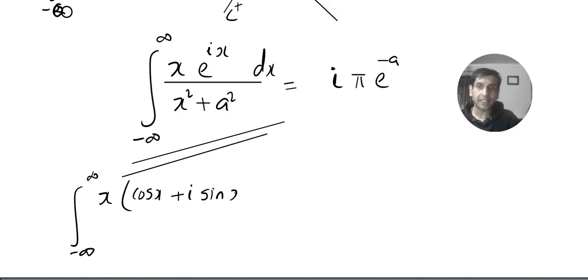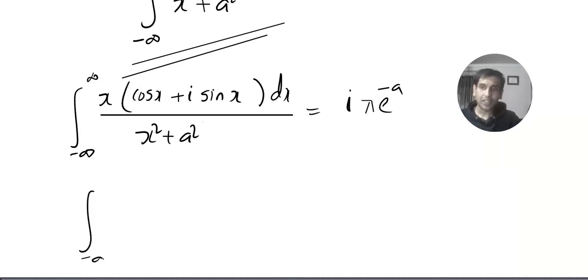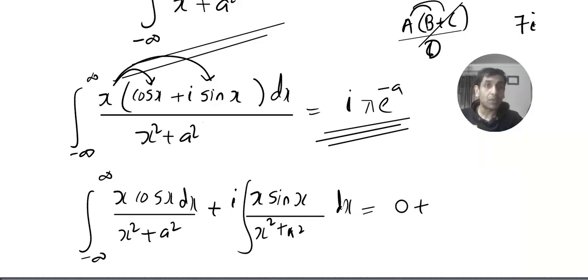So in the next line I'm going to write this as ∫_{-∞}^∞ x(cos x + i sin x)/(x² + a²) equals iπe^(-a). Now you can take this inside and split it. It'll be like ∫ x cos x/(x² + a²) dx plus i ∫ x sin x/(x² + a²) dx. I'll give a small explanation: a(b + c) is ab + ac, divided by d will be a/d·b + a/d·c.